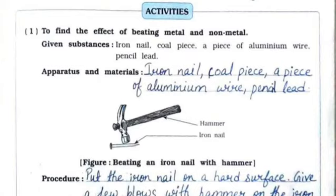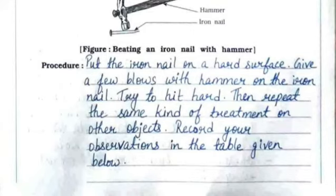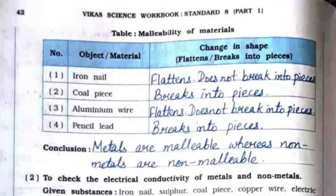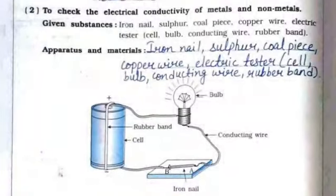Activity 1: to find the effect of beating metal and non-metal. Materials: iron nail, coal piece, aluminum wire, and pencil lead. Procedure: place each object on a hard surface and give a few blows with a hammer. Observation: iron nail and aluminum wire flatten and do not break into pieces; coal piece and pencil lead break into pieces. Conclusion: metals are malleable whereas non-metals are non-malleable.